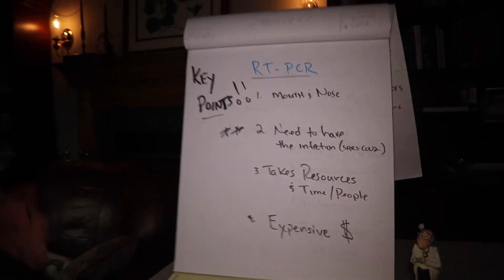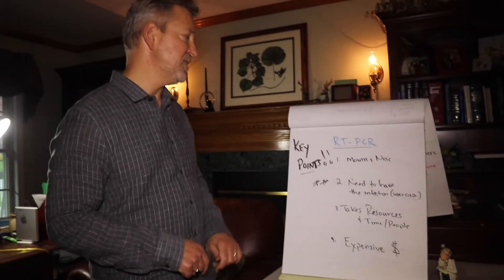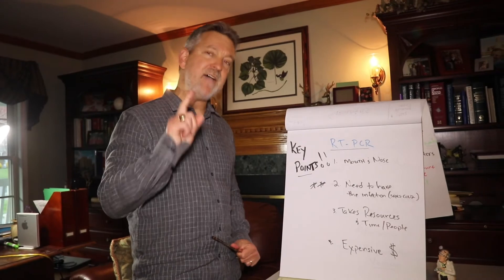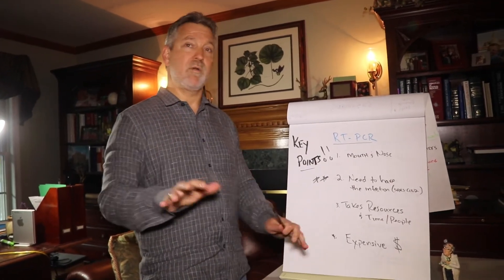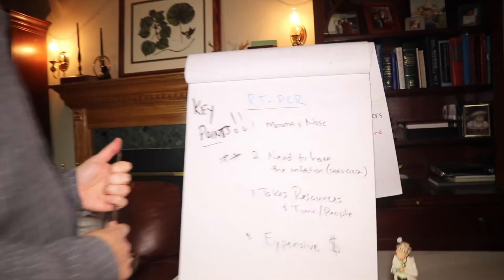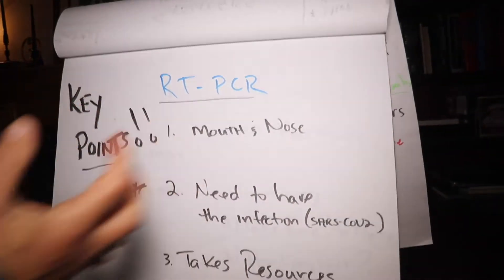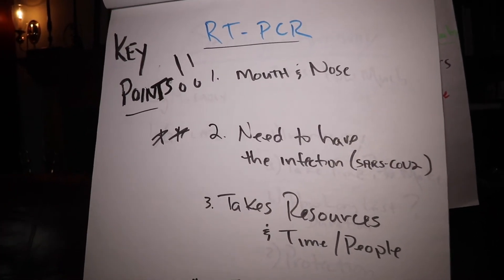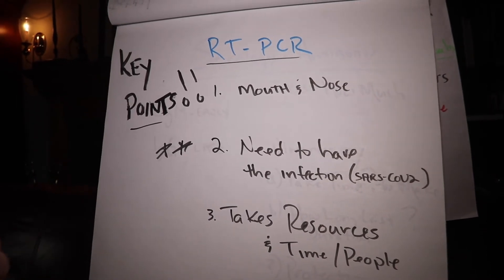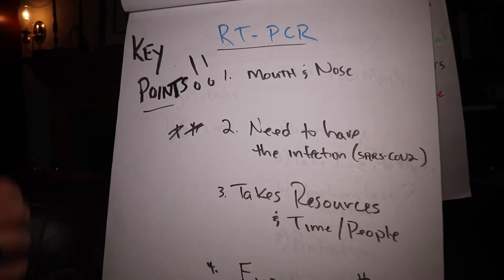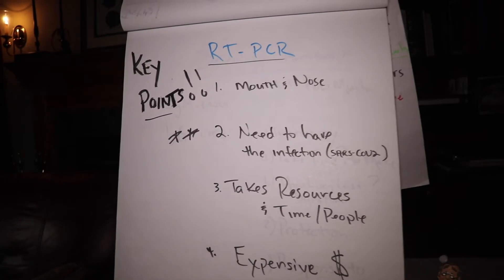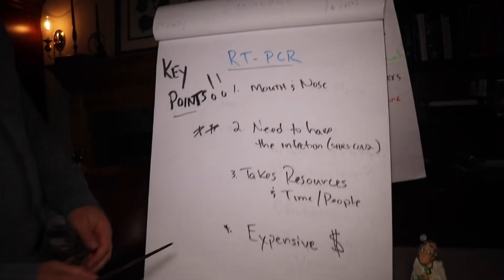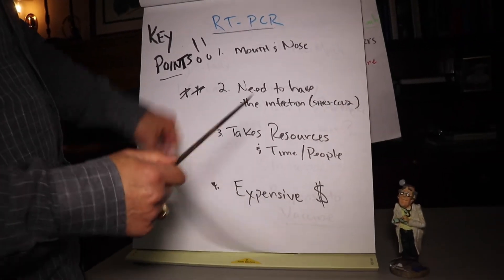Okay? So, very important to review. On the RT-PCR, it's important to realize you have to have the virus in you at that time, or it's useless. So, it has to be in your mouth and nose. That's where we get it. And it has to still be around. You need to have the infection for this to work. This test also takes a lot of resources. It takes time and people. They're trying to shorten it, but that's why it's taken so many days to get results for people. It's also very expensive.